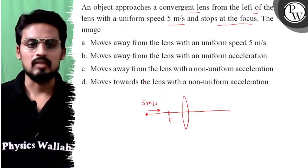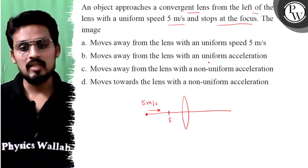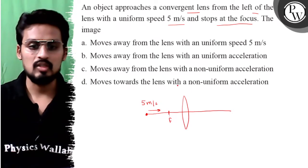The options are: moves away from the lens with a uniform speed of 5 meter per second, moves away from the lens with a uniform acceleration, moves away from the lens with a non-uniform acceleration, or moves towards the lens with a non-uniform acceleration.